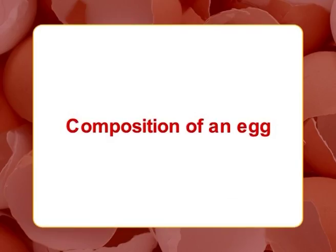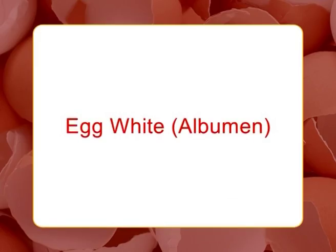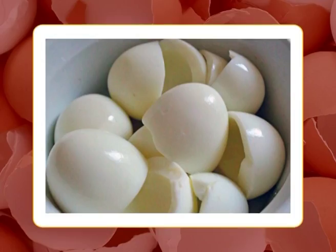Composition of an egg: An average hen egg weighs about 57 grams, including the weight of white, yolk, and shell. Egg white, known as albumin, comprises approximately 58 percent of the weight of an egg. Despite its simple appearance, egg white is a complex mixture of different proteins.